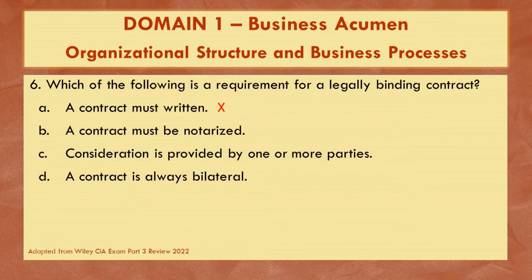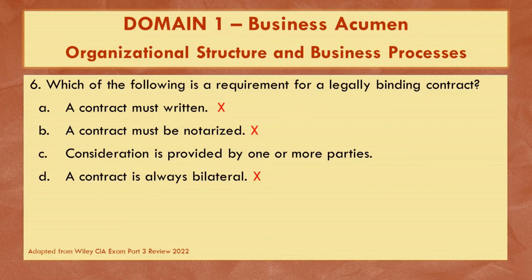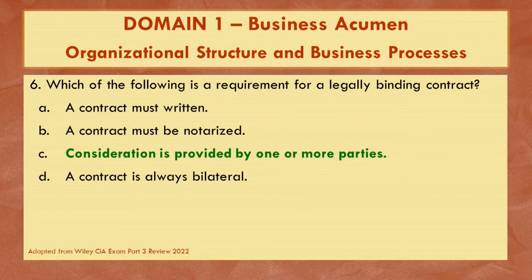A legally binding contract may be written, verbal, or implied through business practices, so it does not necessarily have to be written — eliminate that choice. Since contracts can be verbal, there is no requirement they be notarized — eliminate that option. Contracts can be unilateral, meaning only one party has a responsibility to act, or they can have more than two parties, so the 'always bilateral' option is incorrect. Therefore, the answer is C — consideration is provided by one or more parties.